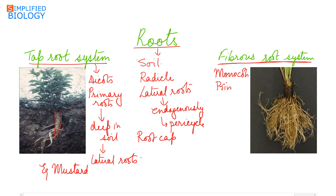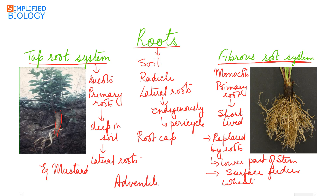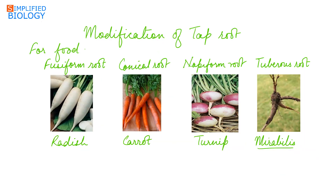The fibrous root system is seen in monocots. The primary root that develops from the radicle is short-lived and is replaced by a number of roots developing from the lower part of the stem. These are much-branched roots that do not go deep into the soil; they are surface feeders. Example: wheat. Roots that develop from any part of the plant other than the radicle are referred to as adventitious roots.